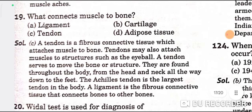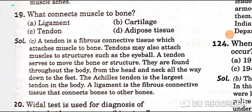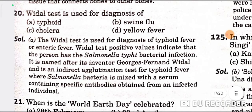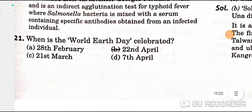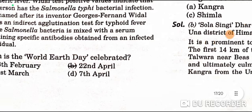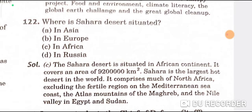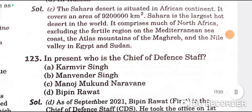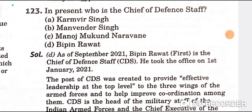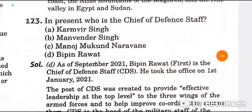What connects muscle to bone? Tendon — C is the correct option. The Widal test is used for diagnosis of typhoid — A is the correct option. World Earth Day is celebrated on 22nd April — B is the correct option. The Sahara Desert is situated in Africa — C is the correct option. The GK portion has started from question 120 onward. In the present, the Chief of Defence Staff is Bipin Rawat — D is the correct option.